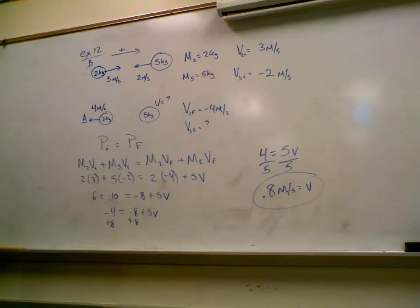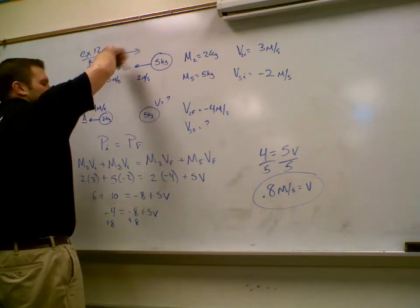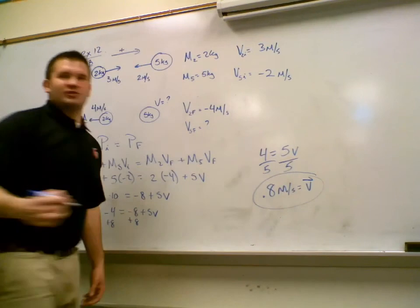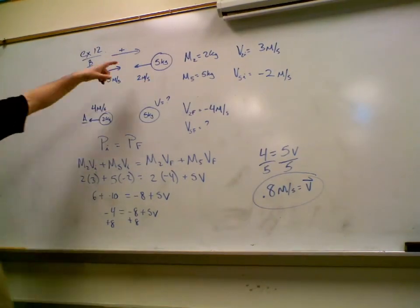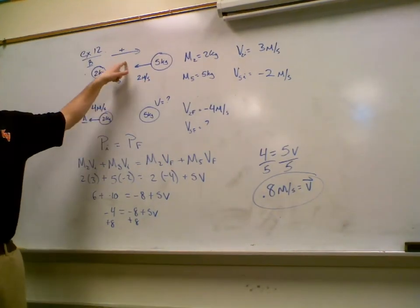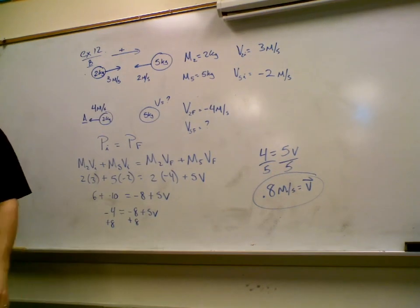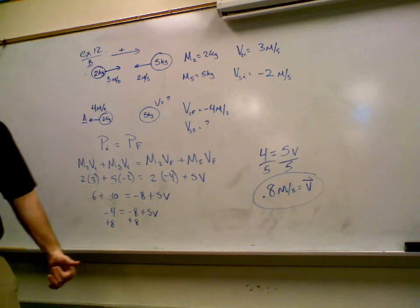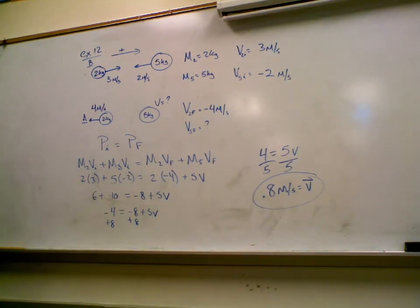Now, which way is it going? Right or left? Right. It's going to the right because we said right was positive. And you can either say 0.8 meters per second to the right, or if you tell me the direction to the right is positive, then I can figure that out. Does that make sense? Does that make sense, guys? Any questions?